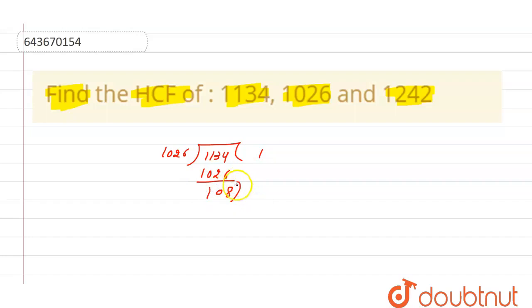Now 1026 will be divided by 108, so it goes in nine times. We will check: nine times eight is seventy-two, nine times one is nine. So we will multiply it by nine, so we will get 972.